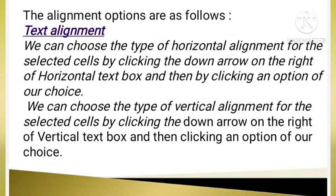Next, you have alignment options like text alignment. We can choose the horizontal alignment for the selected cells by clicking the down arrow on the right of horizontal text box and then by clicking an option of our choice.